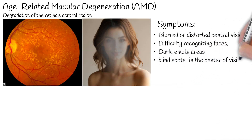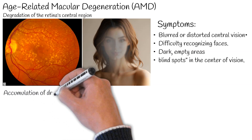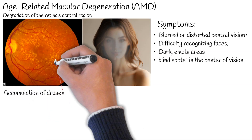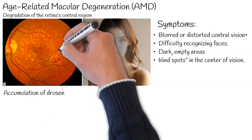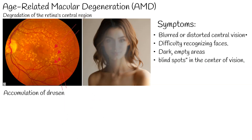Other signs include difficulty recognizing faces, and dark empty areas or blind spots in the center of vision. The mechanism behind this disease is the accumulation of drusen, which are waste products from retinal cellular metabolism, and new blood vessel growth called neovascularization.